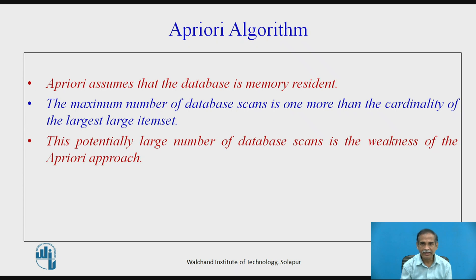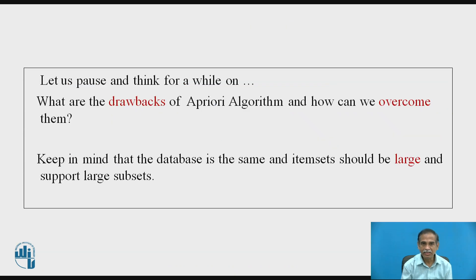Apriori assumes the database is always resident in memory, and the maximum number of database scans is one more than the cardinality of the largest large item set. This is potentially a large number of database scans, which is the weakness of the apriori approach — to find an accurate number of rules, we must perform a large number of scans. This weakness is overcome by research done after the establishment of apriori. The database remains the same, items must be large, and support must also be large for all subsets of item sets being considered.